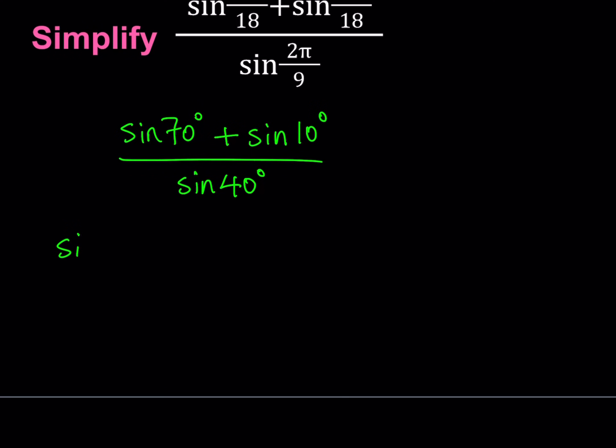I'm going to be writing, and one thing to notice here is that 70 and 10, if you average 70 and 10, you get 40, which is important. So I'm going to take the average for 70 and 10, which is 40, so I'm going to express 70 and 10 using 40 and 30 degrees.